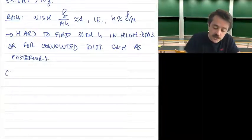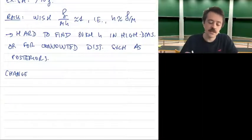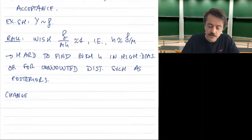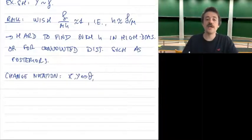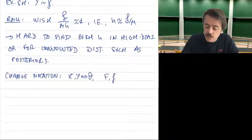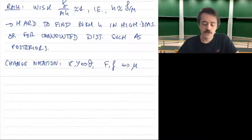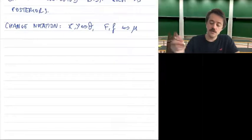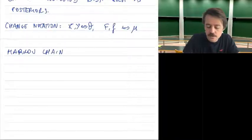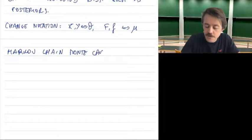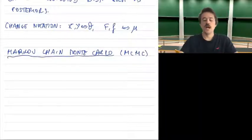We're going to change notation because we have the Bayesian world in mind when introducing the next algorithm — even though it's applicable to many other settings. We change from x, y to the thetas of the Bayesian world, and from f to μ. The method I'm referring to is the so-called Markov chain Monte Carlo, shortened as MCMC.